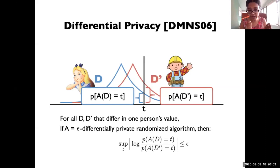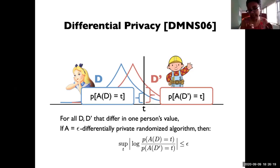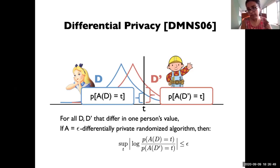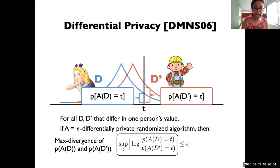More formally, what closeness means is that likelihood ratios are bounded. If you have datasets D and D' that differ in a single person's value, and A is an epsilon differentially private randomized algorithm, then the absolute value of the log likelihood ratio of A(D) at T versus A(D') at T is at most epsilon. What this says is that this likelihood ratio is always bounded — meaning an adversary who sees output T has a bounded posterior. This particular expression is called the max divergence.